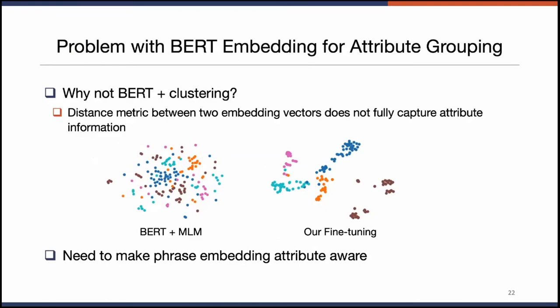To show why BERT plus clustering alone doesn't solve the problem: we visualize embeddings of value candidates colored by ground truth attribute type. On the left, with BERT embeddings, attribute values from the same attribute type are not always close to each other. What we want is the visualization on the right, where embeddings capture attribute type information.